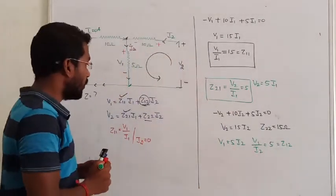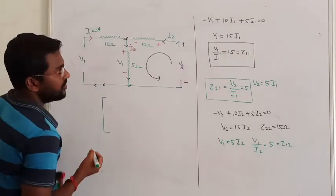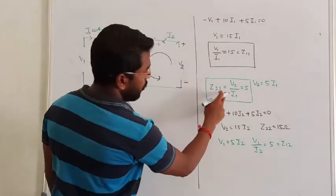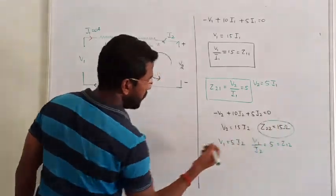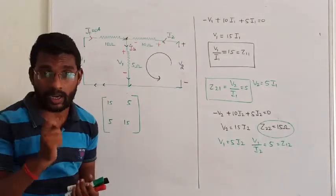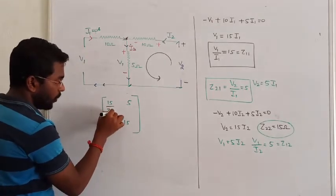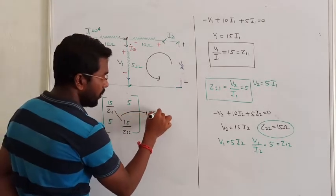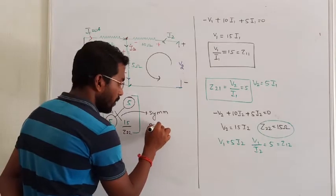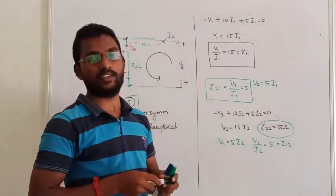We have now found all parameters: Z11 = 15, Z12 = 5, Z21 = 5, Z22 = 15. The Z-matrix is confirmed. Since Z11 equals Z22, the network is symmetric. Since Z12 equals Z21, the network is reciprocal. So the given network is both symmetric and reciprocal. If you have any doubts, ask in the comment section. Thanks for watching.